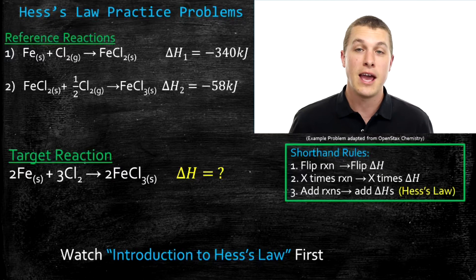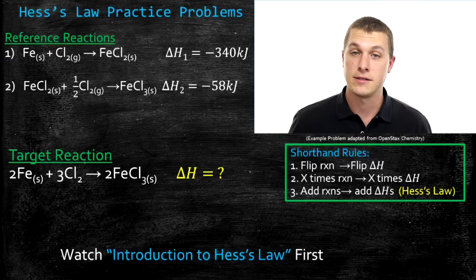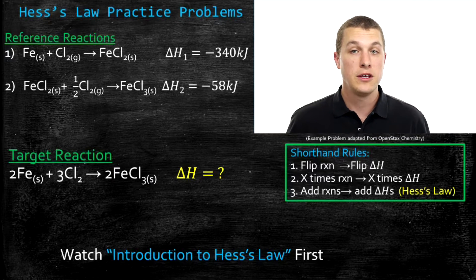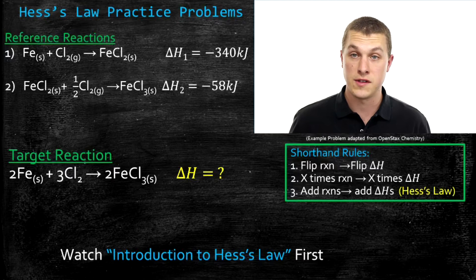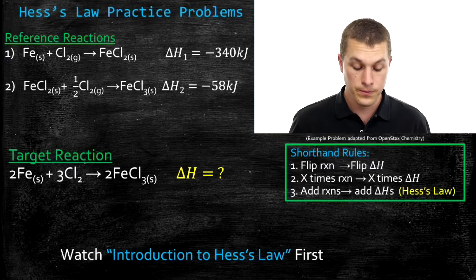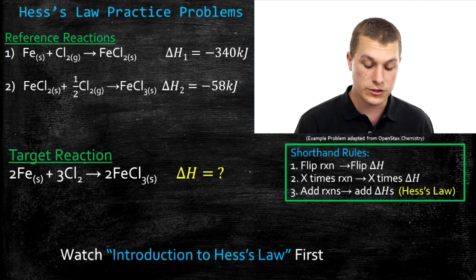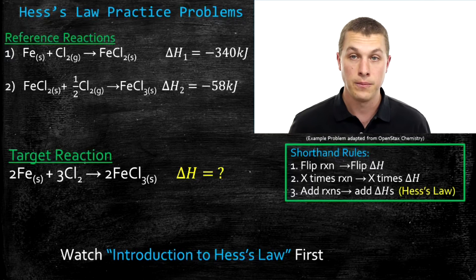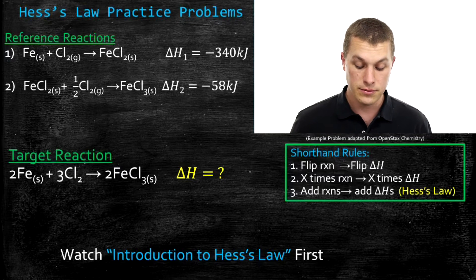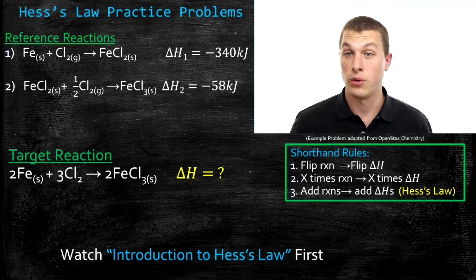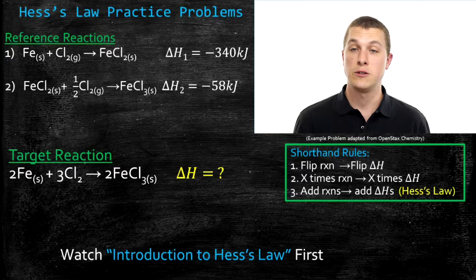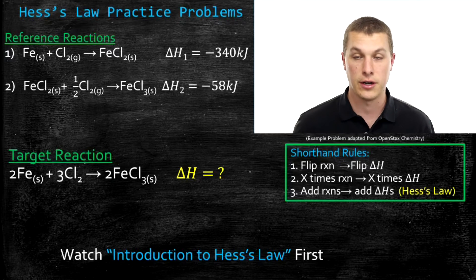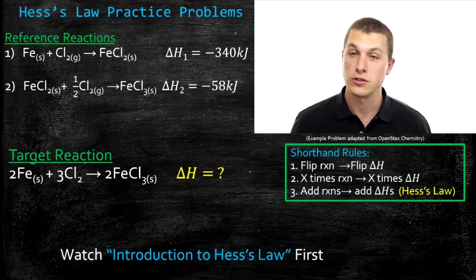Welcome to Real Chemistry. Today we're going to be talking about Hess's Law, and we're going to be doing some practice problems. These problems use some rules that I've written down here to go from reference reactions, where we know their enthalpies, to a target reaction where we don't know the enthalpy. The whole goal of these problems is to figure out that enthalpy for the target reaction.